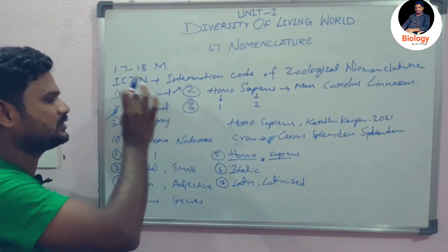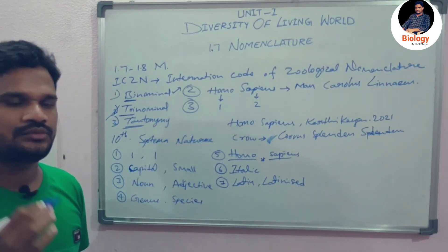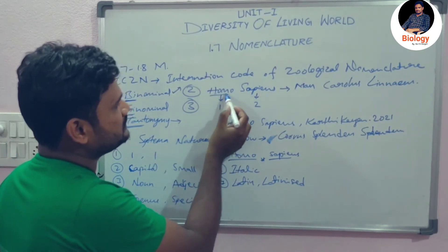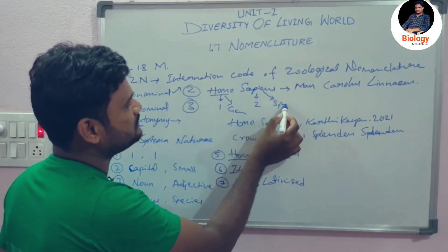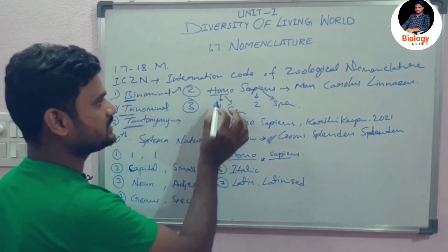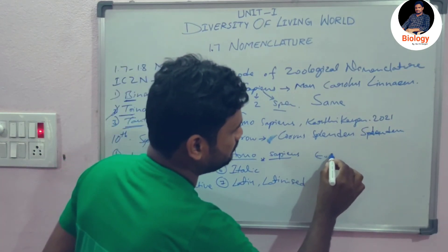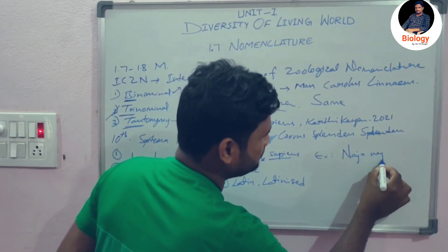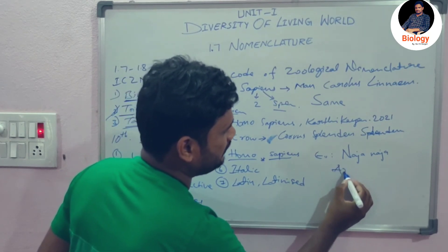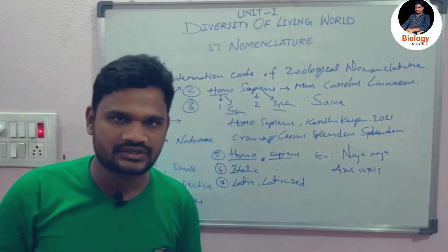The last one is tautonymy. In binomial nomenclature, the first word is denoted to genus and the second word to species. In tautonymy, both words — the genus name and the species name — should be the same. For example, Naja naja — the first word starts with a capital letter and the second word with a small letter. Another example is Axis axis. These are examples of tautonymy.